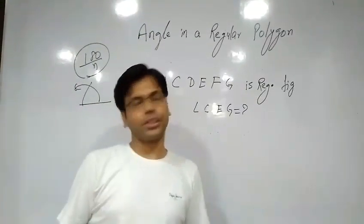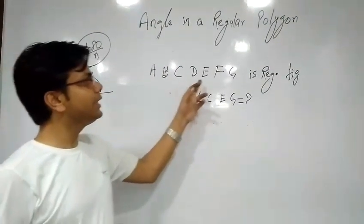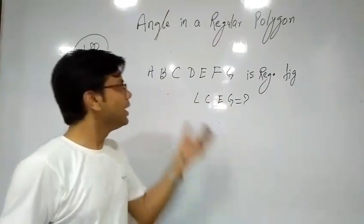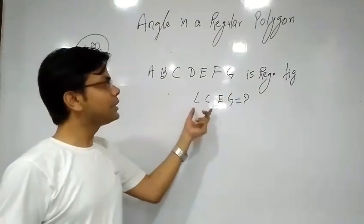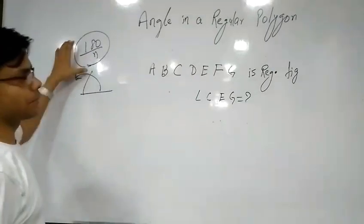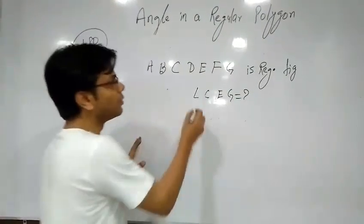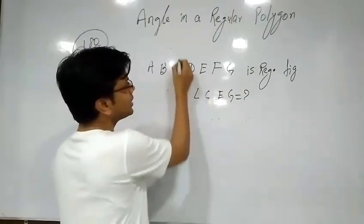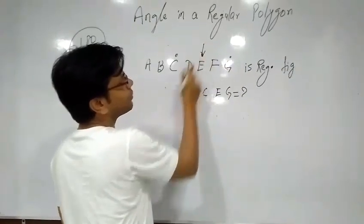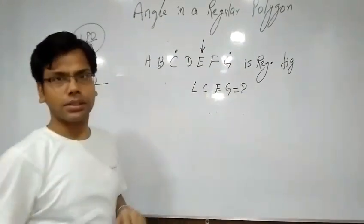Now let's solve a question. The question is: A, B, C, D, E, F, G is a regular 7-sided figure. Then what is the angle CEG? With the help of our concept, we can solve it directly. We know the points are C, E, G. E is the middle point, and C and G are the extreme points.